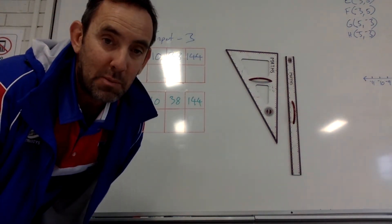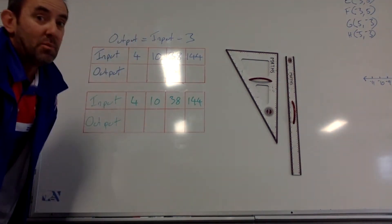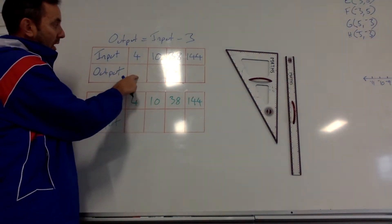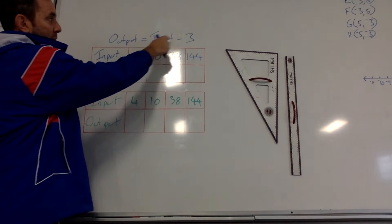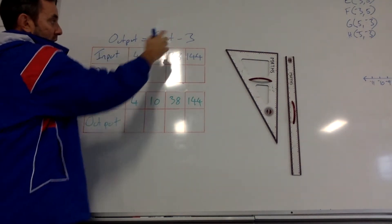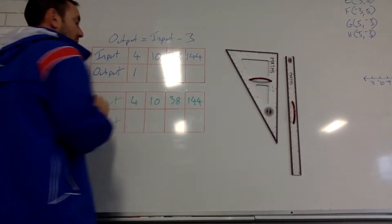Pretty basically, for my first one, the output, that's going to equal input minus 3. So, input is 4, minus 3 will be 1. Next one, 10, input minus 3 is going to be 7.